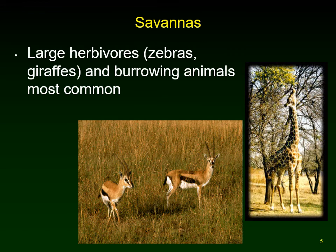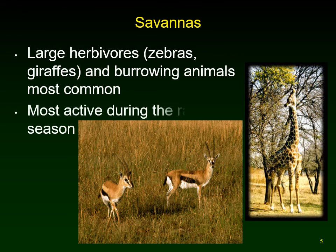We have giraffes and Thompson's gazelles, both from the African savannas. These animals are most active during the rainy season. Giraffes don't migrate during the dry season because they feed on the leaves of scattered trees across the savannah, so they don't have to follow the rains. But Thompson's gazelles will follow the rain patterns.